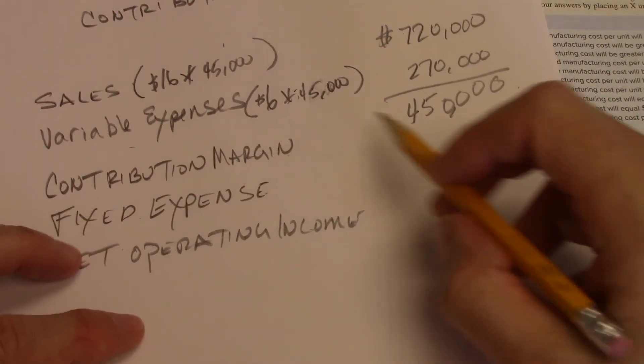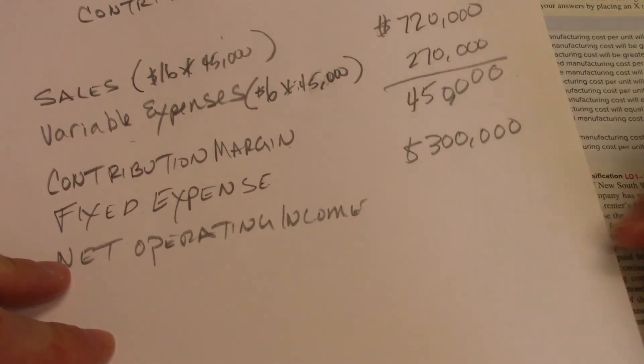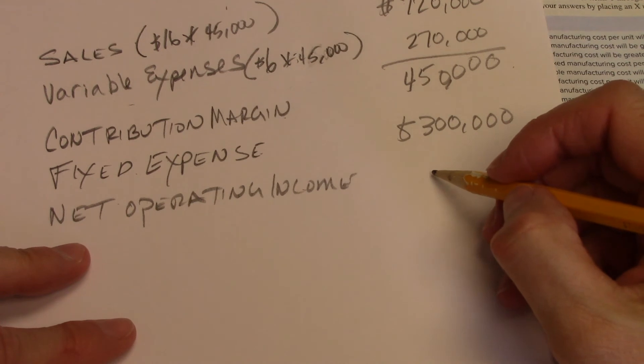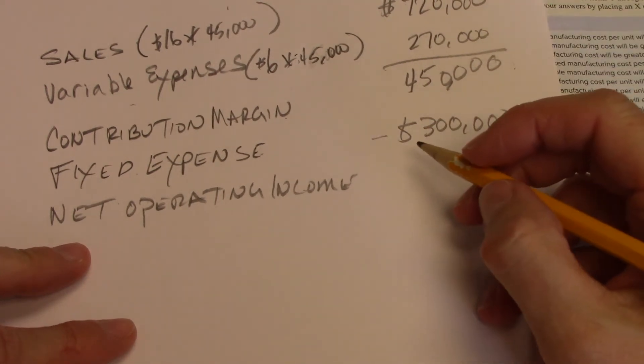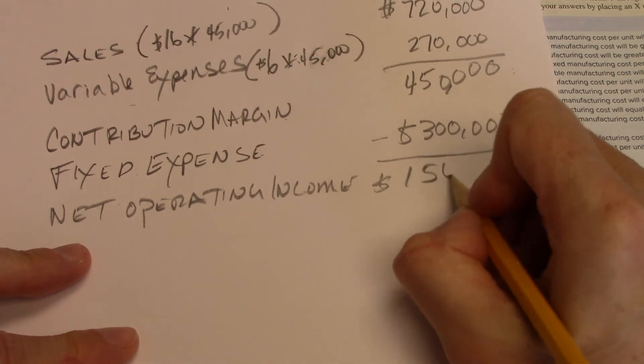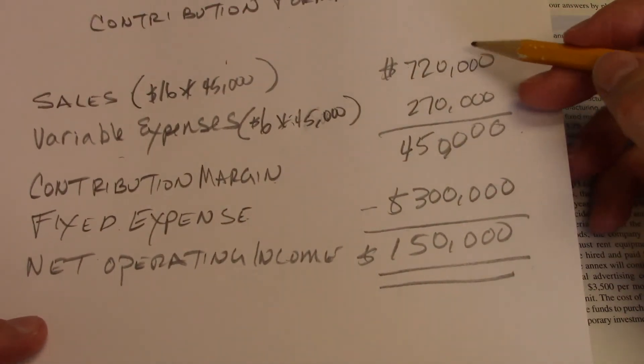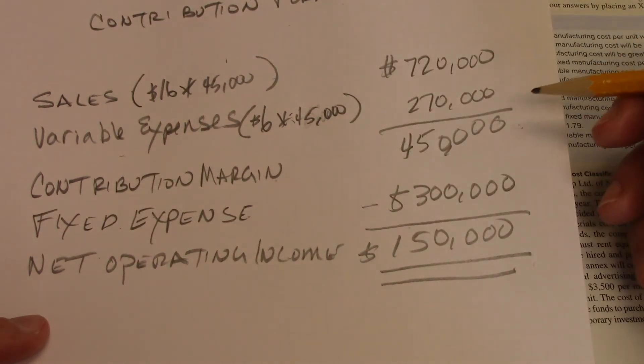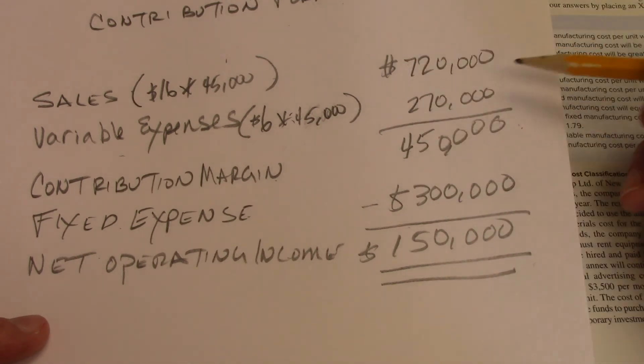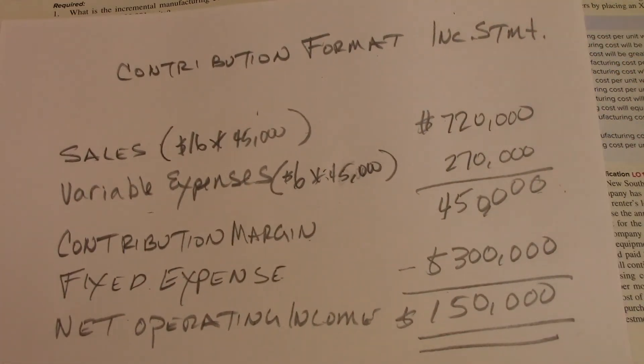So our contribution margin is $450,000. Fixed expenses, we know, $300,000. That means net operating income, $450,000 minus $300,000, is $150,000. So we happen to know that our net operating income is $150,000. And we know that at 45,000 units, those 45,000 units are contributing $450,000 to cover fixed expenses.